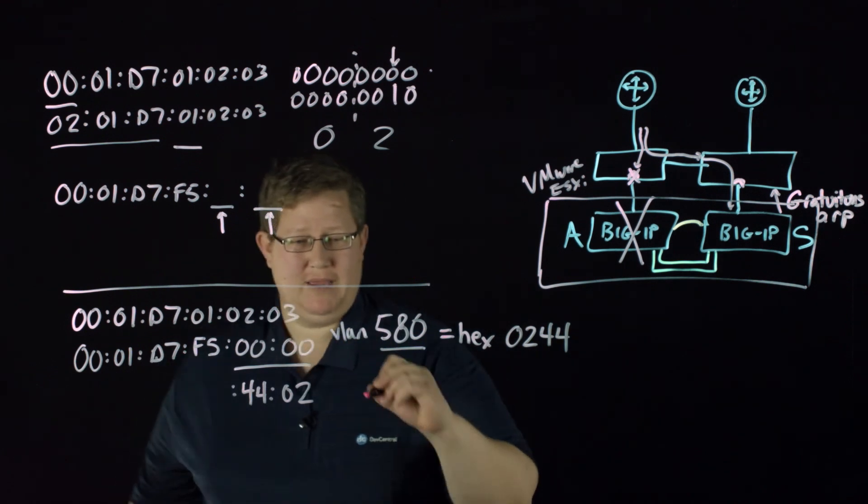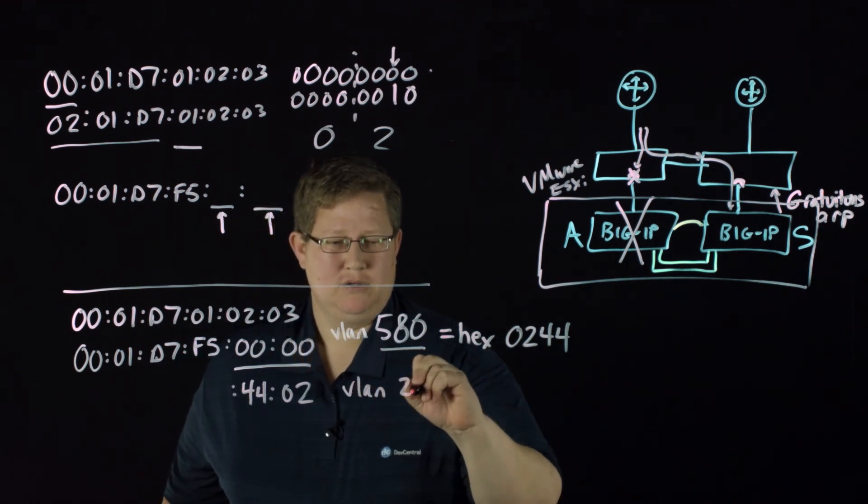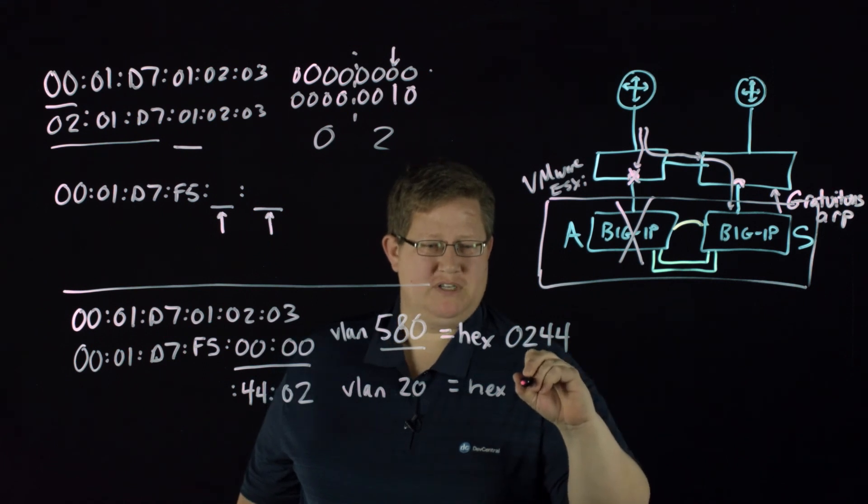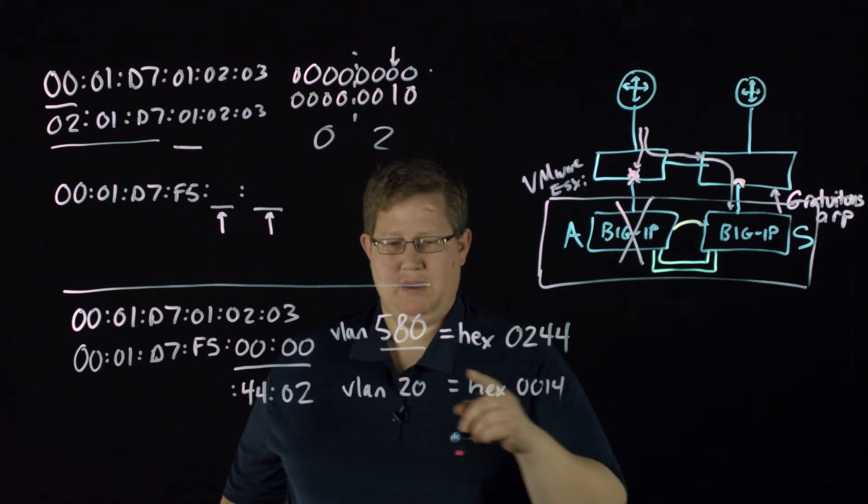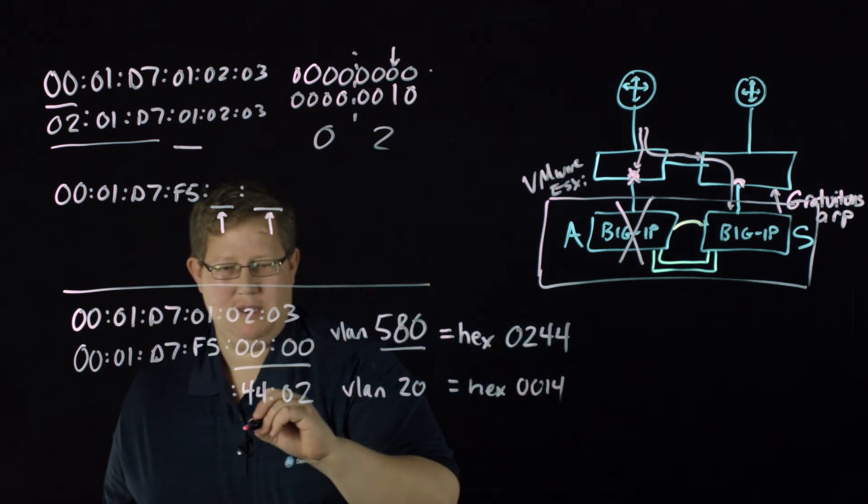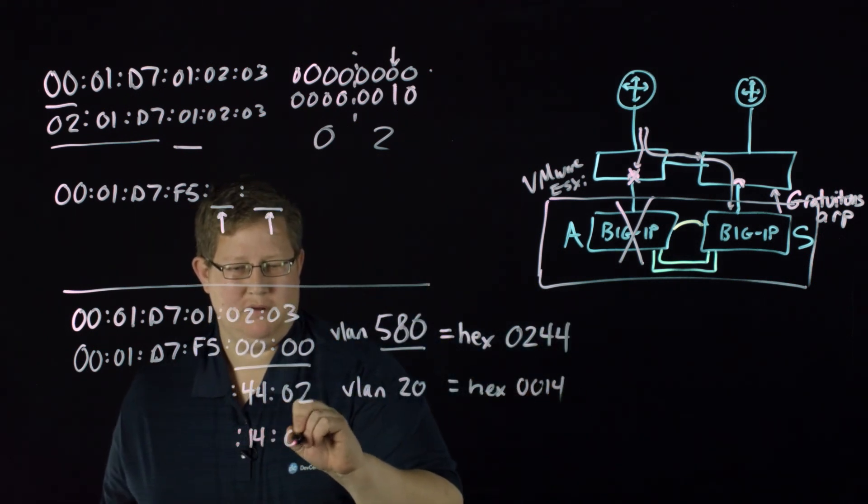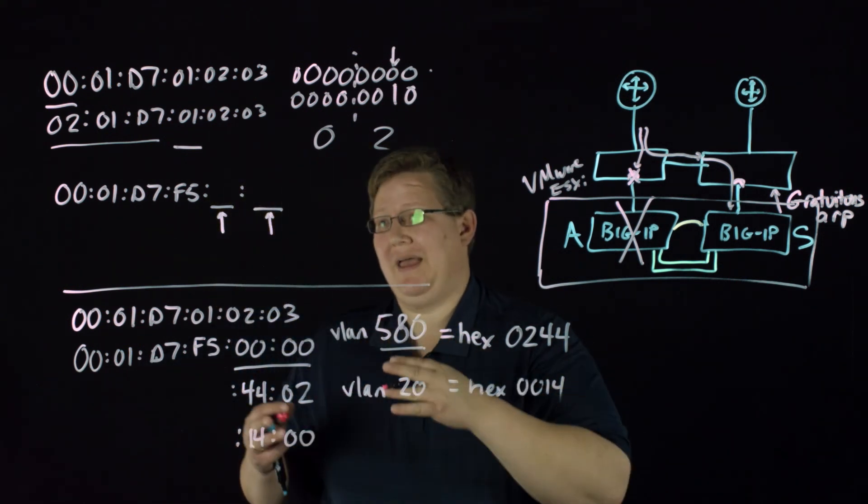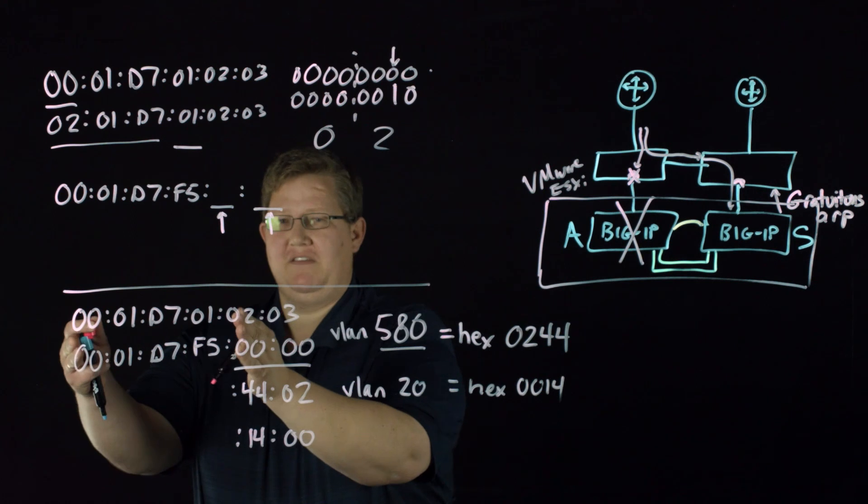So if we had a different VLAN, say if we had VLAN 20, well that's hex 14. And so that would be 1400 as the last. So it's going to do that for every VLAN within that traffic group on this base MAC address.